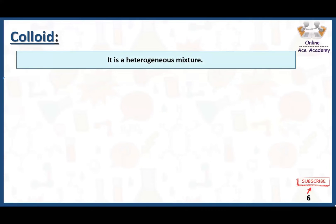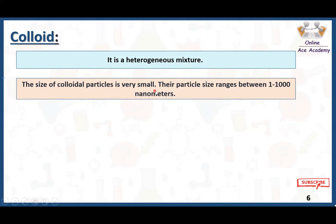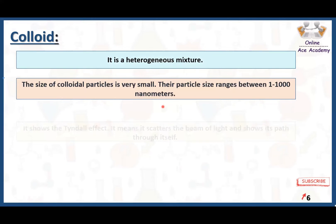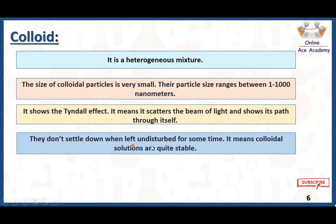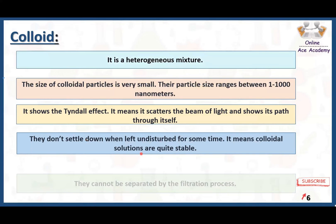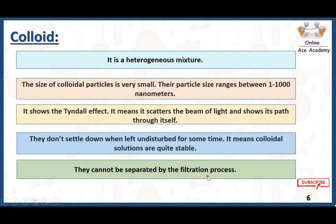Some properties of colloids: it is a heterogeneous mixture. The size of the colloidal particles is very small, ranging between 1 to 1000 nanometers — somewhat bigger than solution particles but still very small. Colloids show the Tyndall effect, which is a unique property. Because the particles are dispersed throughout the mixture, when a beam of light passes through it, they scatter the beam of light — this scattering is called the Tyndall effect. Colloidal solutions are quite stable and don't settle down when left undisturbed, and cannot be separated by filtration.